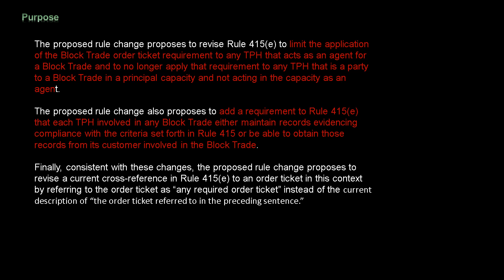The requirement would no longer apply to any TPH that is a party to a block trade in a principal capacity and not acting as an agent. The proposed rule change also proposes to add a requirement to Rule 415(e) that each TPH involved in any block trade either maintain records evidencing compliance with the criteria set forth in Rule 415, or be able to obtain those records from its customers involved in the block trade. Consistent with these changes, the proposed rule change also proposes to revise a current cross-reference in Rule 415(e) to refer to the order ticket as 'any required order ticket.'